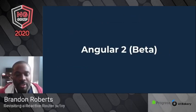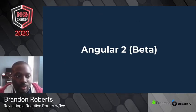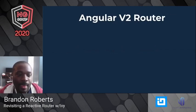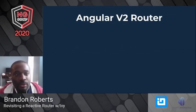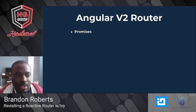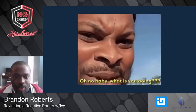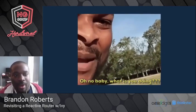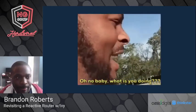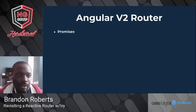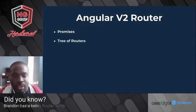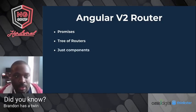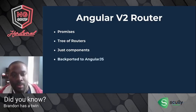Next, the Angular 2 router, as it was called back then, was being developed around the time I got involved with Angular. It had a lot of interesting goals — written primarily using Promises as its primary interface. Though observables were becoming more prominent, that router still used observables underneath; it just wasn't exposing them publicly. It had a tree of routers at each level in a hierarchy, it was just about components as there were no ng-modules at the time, and it was going to be backported to AngularJS.